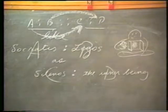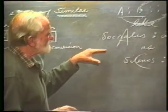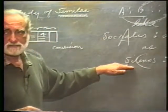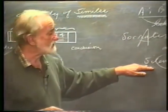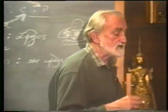If Socrates is like a Silenus, then everything we say about Socrates must find a parallel with a Silenus, or the simile is not being used exactly. In the Symposium, Alcibiades goes to great lengths to say again and again in a variety of ways that he is going to tell the truth about Socrates and do it through the use of similes.